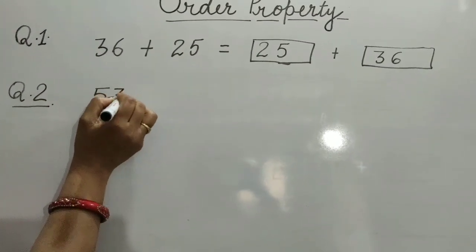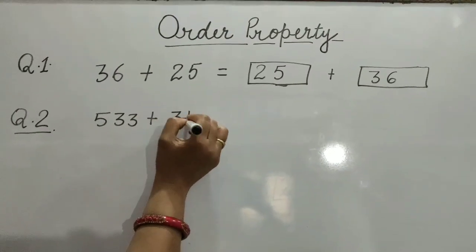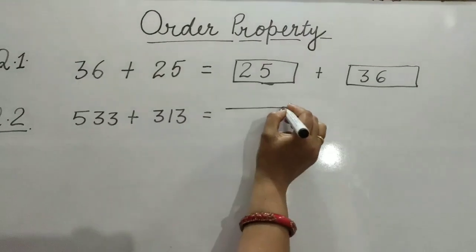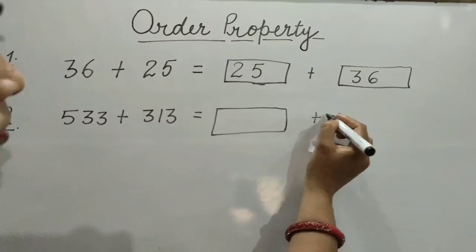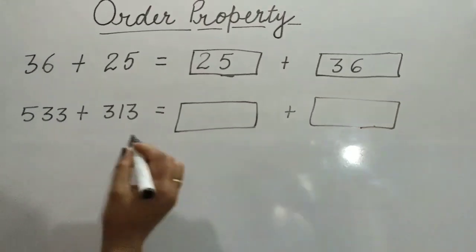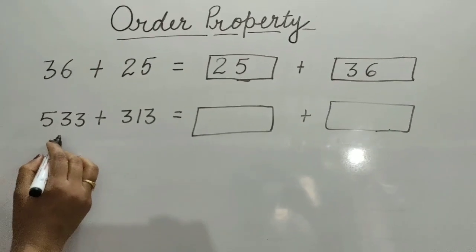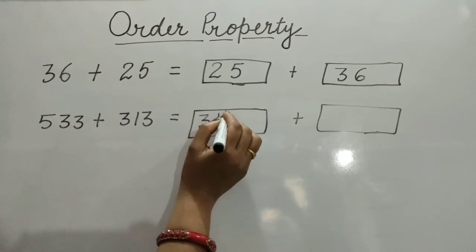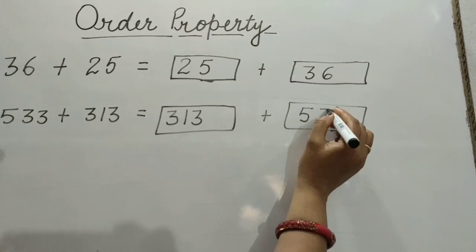Question 2: 533 plus 313. Children, we will change the order of numbers. Write 313 plus 533.